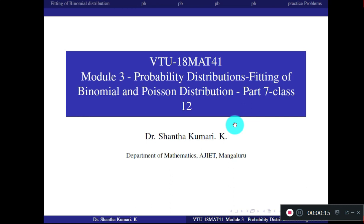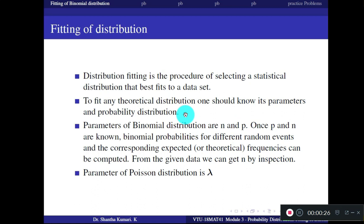Before fitting the data, you should remember the PDF of binomial and Poisson distribution. Distribution fitting is a procedure of selecting a statistical distribution which best fits the given data. To fit any theoretical distribution, one should know its parameters. For binomial distribution, the parameters are n and p. For Poisson distribution, the parameter is lambda.